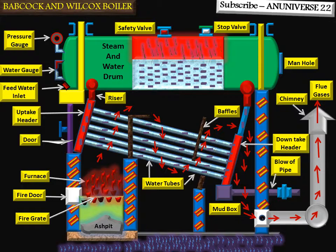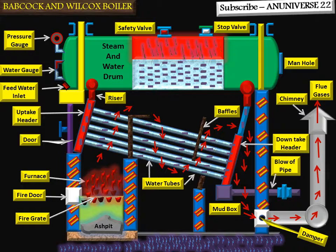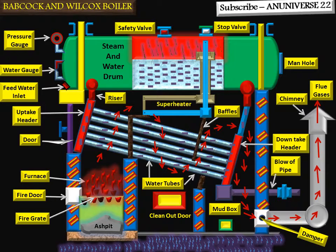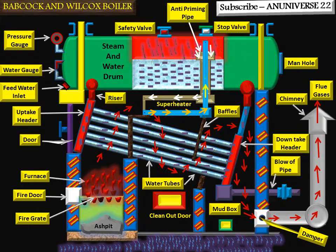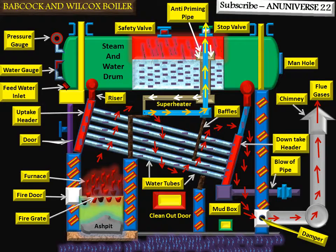A chimney is provided for the exit of gases and a damper is placed at the inlet of the chimney to regulate the draught. The superheater is situated on the upper side of the water tubes. One end of the superheater is connected to the drum and the other end is free for process work. Steam flows from the drum to the superheater where it is heated by flue gases and sent for process work.